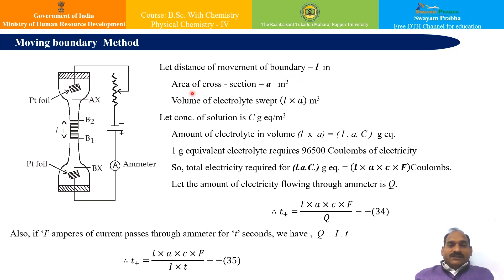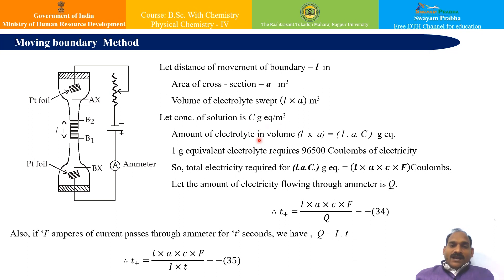Once we record the transfer from B1 to B2, the calculations can be done as follows. Let the distance of movement of the boundary be L meters, and the area of cross section of the tube be A meter square. The volume of electrolyte swept is L × A meter cube. Let the concentration of solution be C gram equivalents per meter cube, so the amount of electrolyte in that volume is L × A × C gram equivalents.